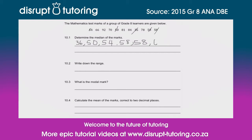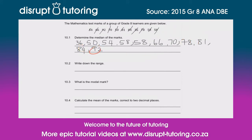The next one seems to be 66, so we'll write that in. Then 78. Actually, we missed one — 70 seems to be the next one before 78, so that sometimes happens and that's okay. Then we've got 81, then 84, and then 92. I typically count the numbers I started with: 1–2–3–4–5–6–7–8–9–10–11. Then I count what I've written down — also 11 — which means I've copied all the numbers correctly.